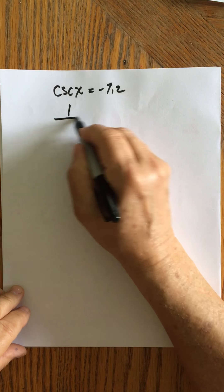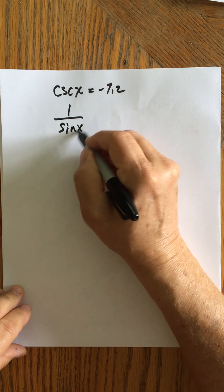Now, because my calculator has the buttons sine, cosine, and tangent, I really don't want to leave this as cosecant. Instead, I want to change it to its reciprocal form, 1 over sine x.